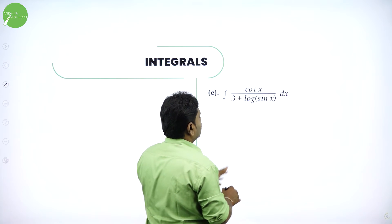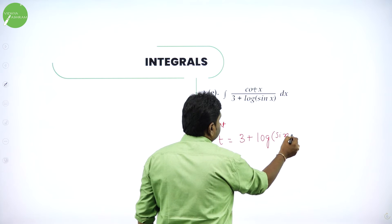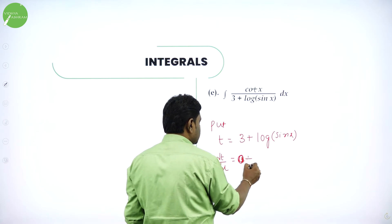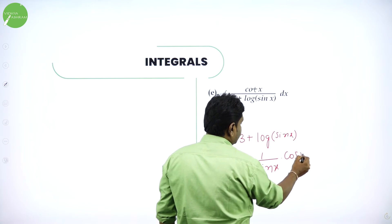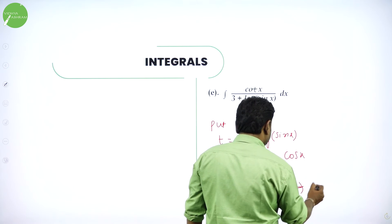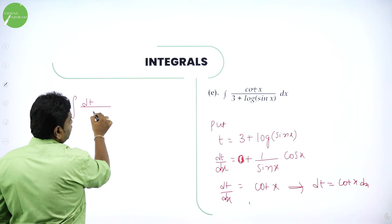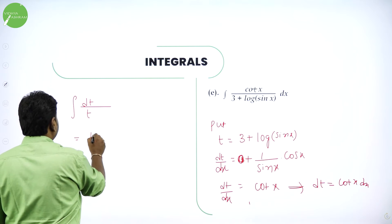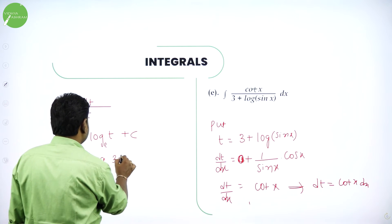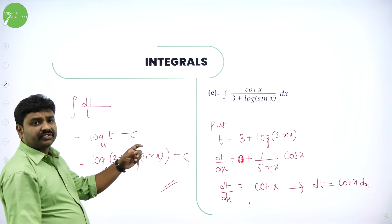Integration of cot x by 3 plus log of sin x dx. Put t as denominator: t is 3 plus log of sin x. Differentiate both sides. Dt by dx: derivative of 3 is 0 plus derivative of log of sin x is 1 by sin x into derivative of sin x is cos x, by chain rule. So, we are left out with cos by sin, which is cot x. So, dt implies dt is cot x dx. The given problem becomes integral of dt divided by t. Integration of 1 by t is log t plus c. What is log t? t value is denominator: 3 plus log of sin x plus c. Here derivative of log of sin x is cot x, that is the numerator.